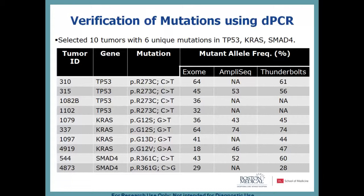The next thing we wanted to do was to verify these mutations and gain experience with the digital PCR platform. We selected 10 tumors that we had sequencing data on and picked six unique mutations in three genes: TP53, KRAS, and SMAD4. For TP53 it was a single mutation in four samples; we had three separate KRAS mutations; and two different mutations at the same location in the SMAD4 gene.